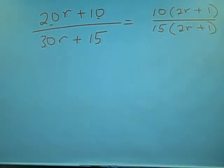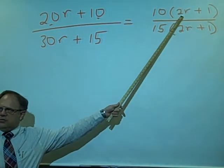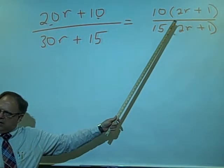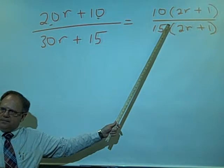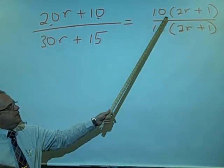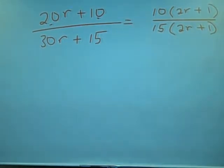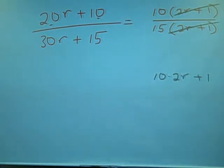Now, as long as these quantities, 2r plus 1 and 2r plus 1 are the same, we can cancel, okay? Because they're all part of the same quantity. So, there's 2r plus 1 and 2r plus 1, because it's multiplying times the 10 and the 15, those we can cancel. So, we can cancel the 2r plus 1s, as long as it's a set, a whole thing. Now, if it was 10 times 2r plus 1 like that, could not do it. But, because it's in parentheses, you can cancel it, okay?